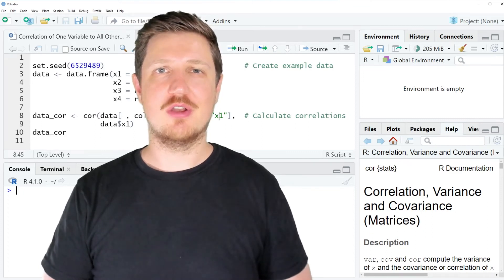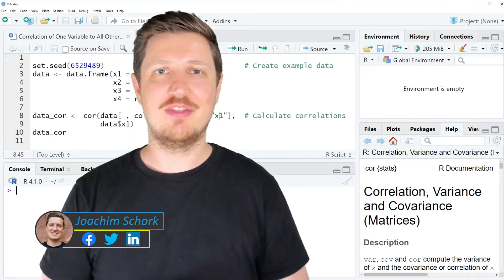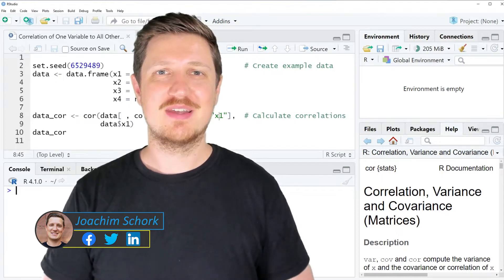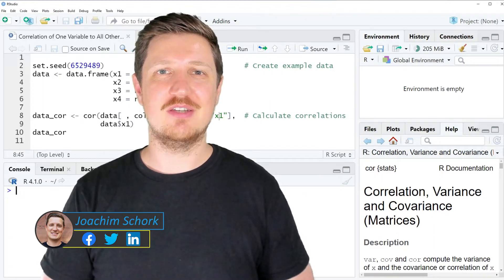This video explains how to get the correlation of one variable to all the others in a data frame using the R programming language. Without too much talk, let's dive into the R code.